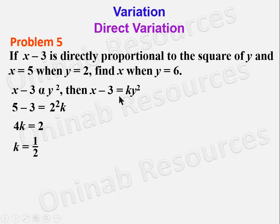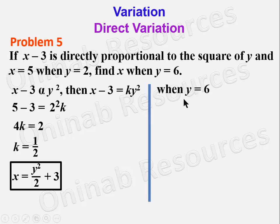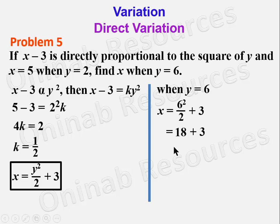We create the formula, making X the subject: X equals half Y squared plus 3. That is the formula connecting X and Y. To find X when Y is 6: X equals 6 squared over 2 plus 3. 6 squared is 36, divided by 2 gives 18, plus 3 gives 21. So X is equal to 21 when Y is equal to 6. We are done with problem 5.